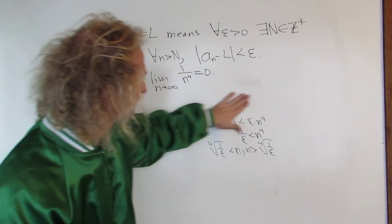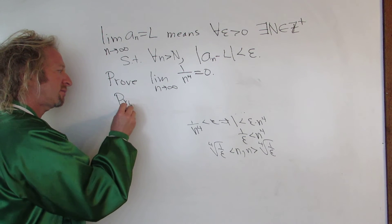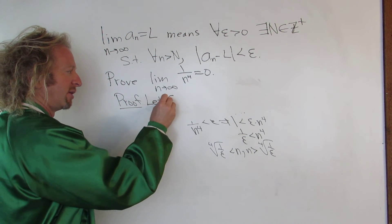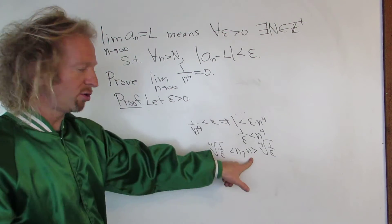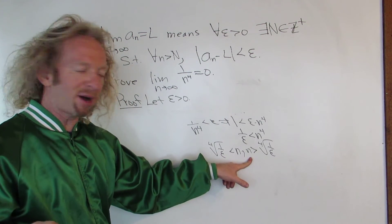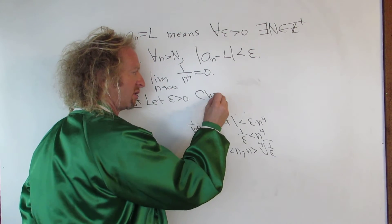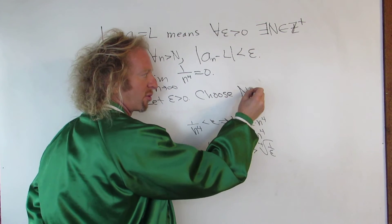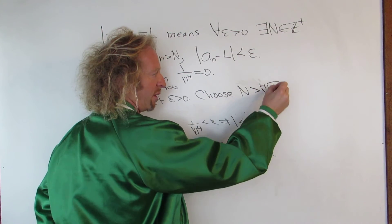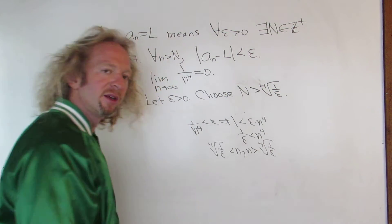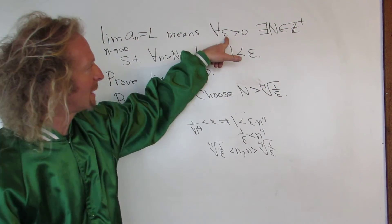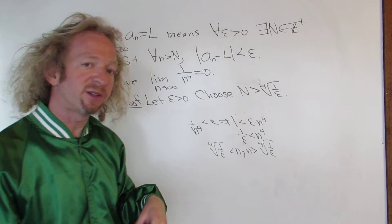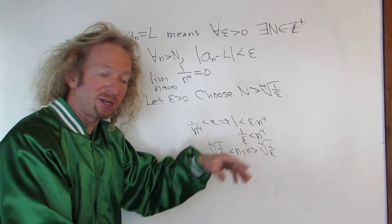Now let's do the proof. Let epsilon be greater than zero. Choose a positive integer N greater than the fourth root of one over epsilon. For all epsilon greater than zero, we have shown the existence of such an N via the Archimedean property.